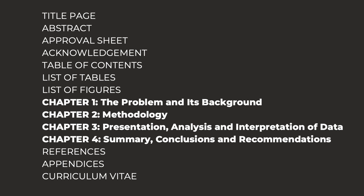Here is an example of a possible table of contents of a four-chapter format. Aside from the main parts, the following are also included: title page, abstract, approval sheet, acknowledgement, table of contents, list of tables, list of figures, references, and appendices.